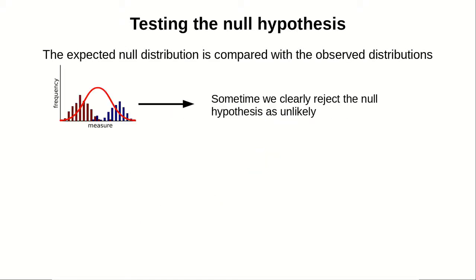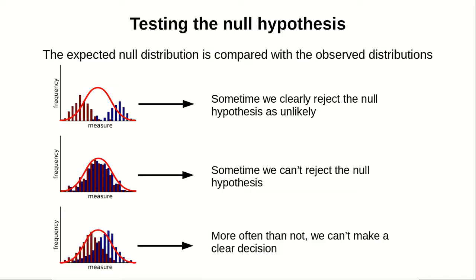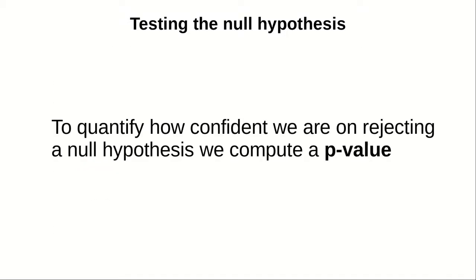If the distributions of the two data sets are very different to the supposed null distribution, we can clearly reject the null hypothesis as unlikely. In some other cases, we will see that the individual distributions are very similar to the general null hypothesis that we compute from the common sample. In that case, we can reject, but more often than not, we cannot make a clear decision. That's why we need ways of estimating the confidence on rejecting a null hypothesis. That's why we compute something called p-value.